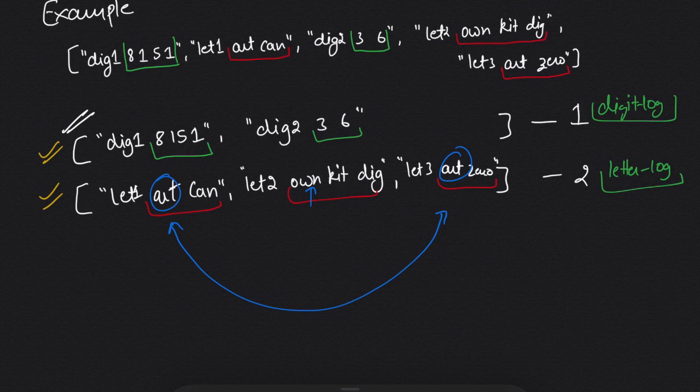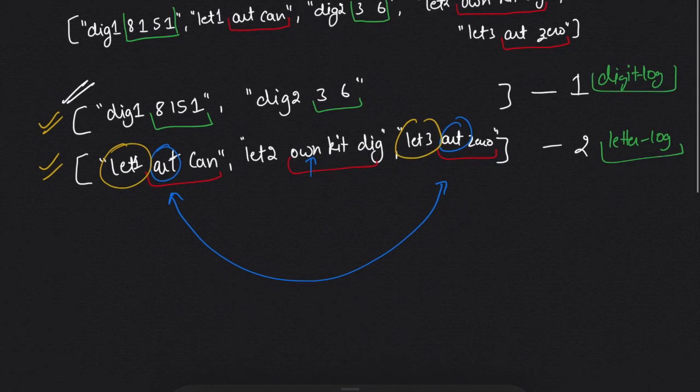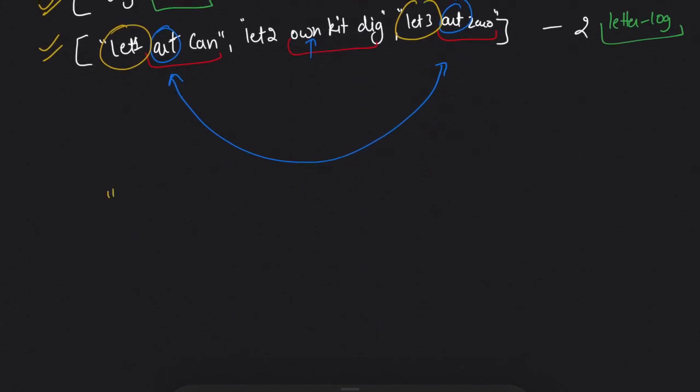So it was clearly mentioned in the question whenever there will be a tie we will consider the identifiers. So in this way our answer will look like 'let1 art can' because...